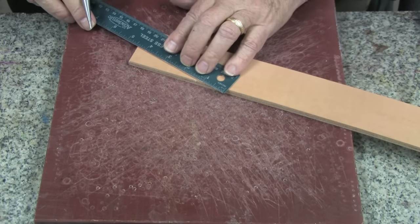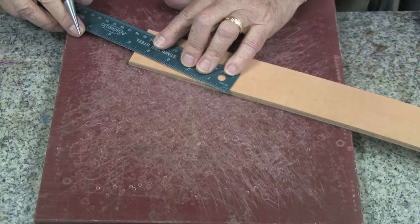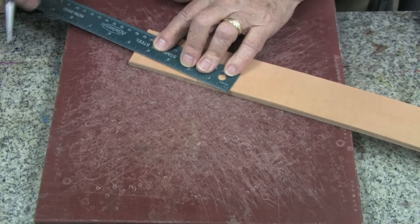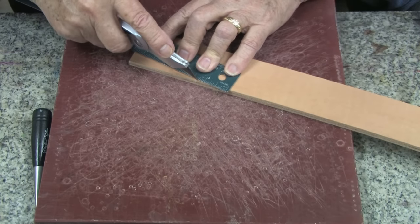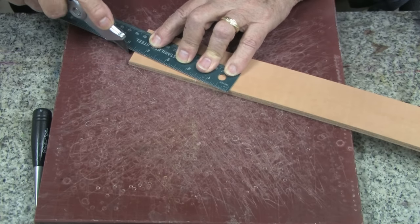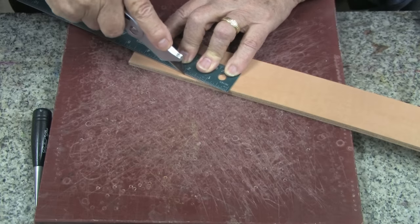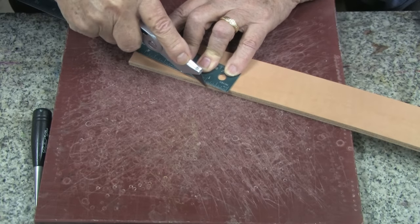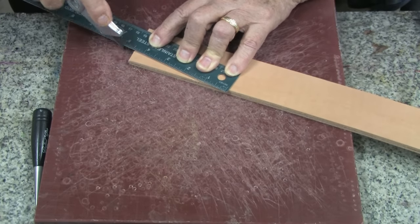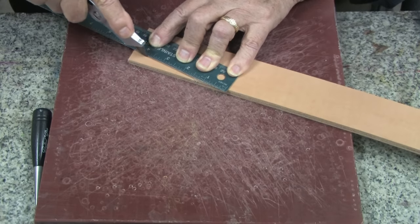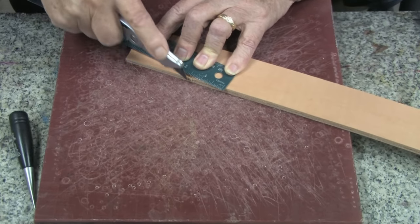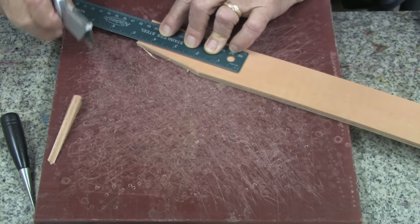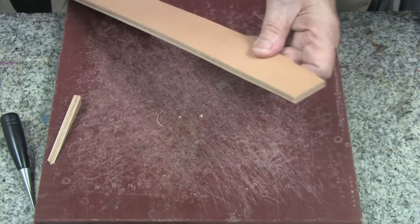Now I will place my straight edge across the two marks, and with a sharp knife, holding it straight up and down, I will cut completely through the two thicknesses of the eight to nine ounce leather. And I will do this on the other side as well.